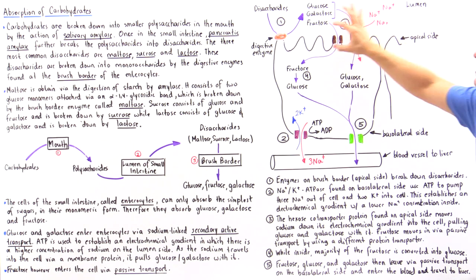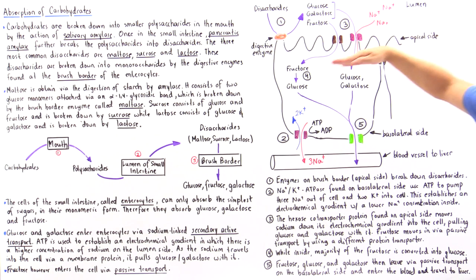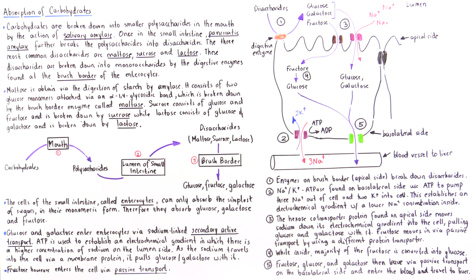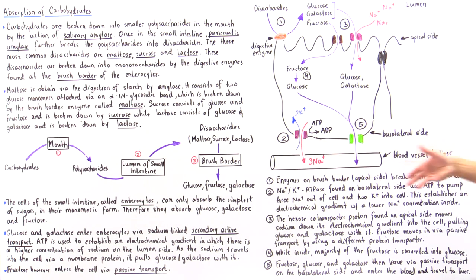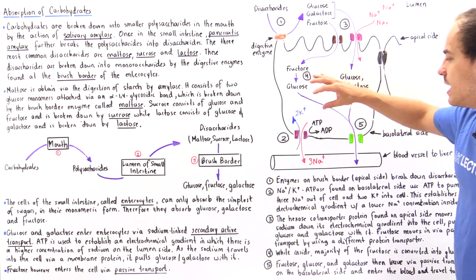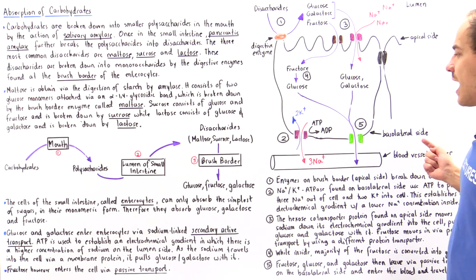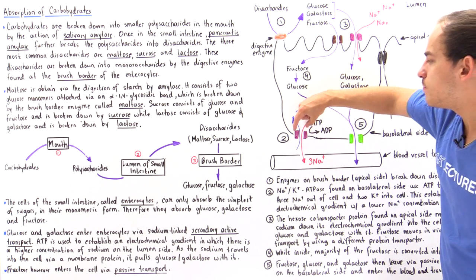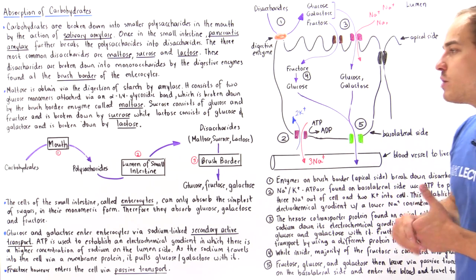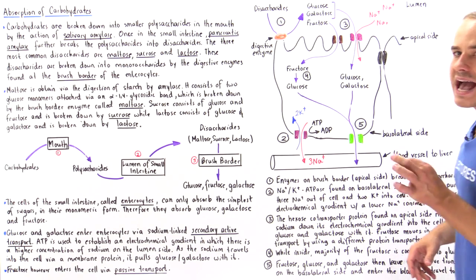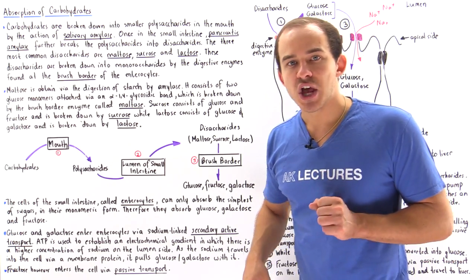Remember, the apical side points towards the lumen of the small intestine, while the basolateral side points towards our blood vessels. On the basolateral side, we have an important type of transport protein known as sodium-potassium ATPase.